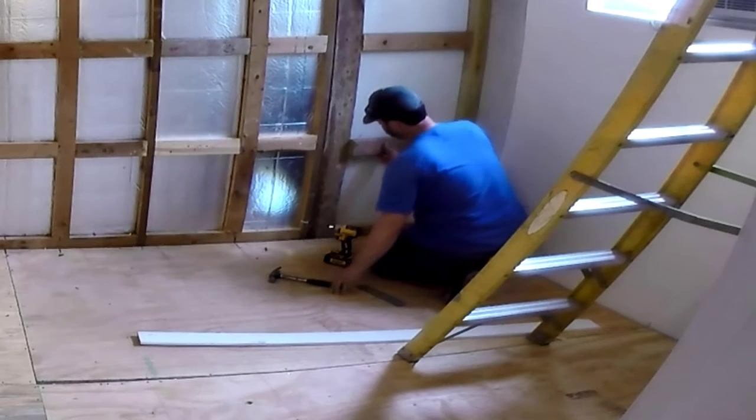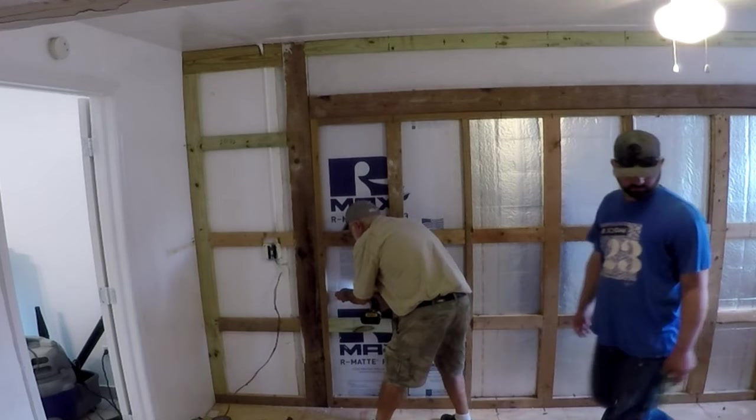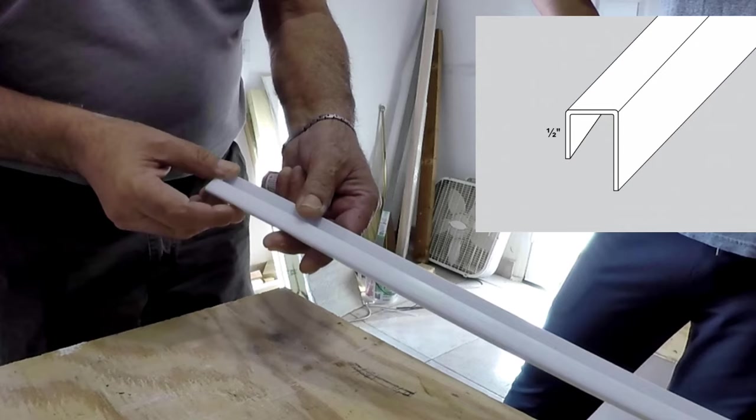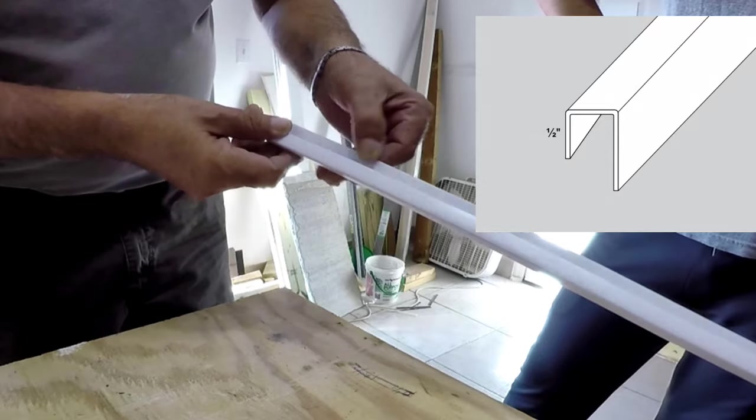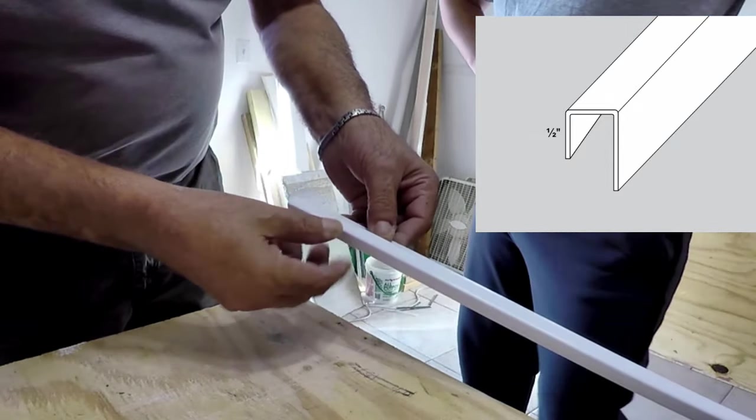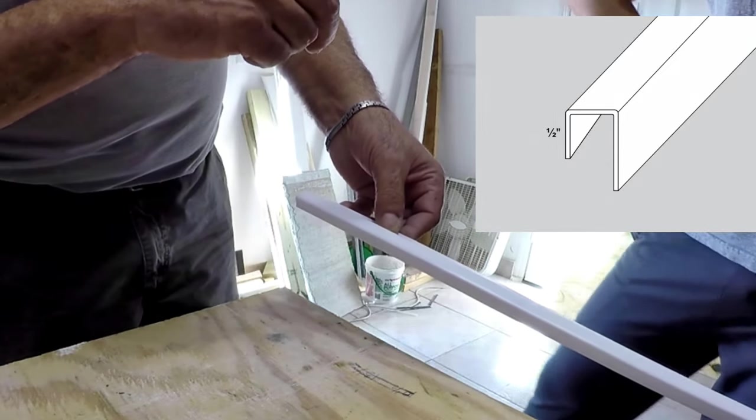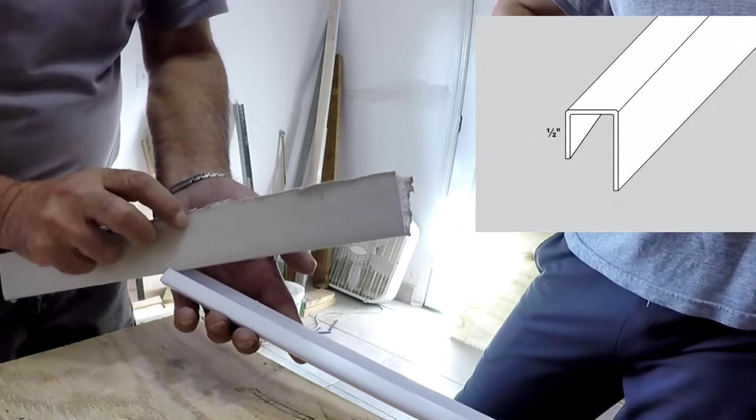We've added insulation board between the masonry wall and the studs and are ready to install the drywall. But before we do that, I'm trying this PVC molding, also known as vinyl drywall trim or vinyl J-trim. It provides a finished edge of the drywall that meets against the finished ceiling or walls.